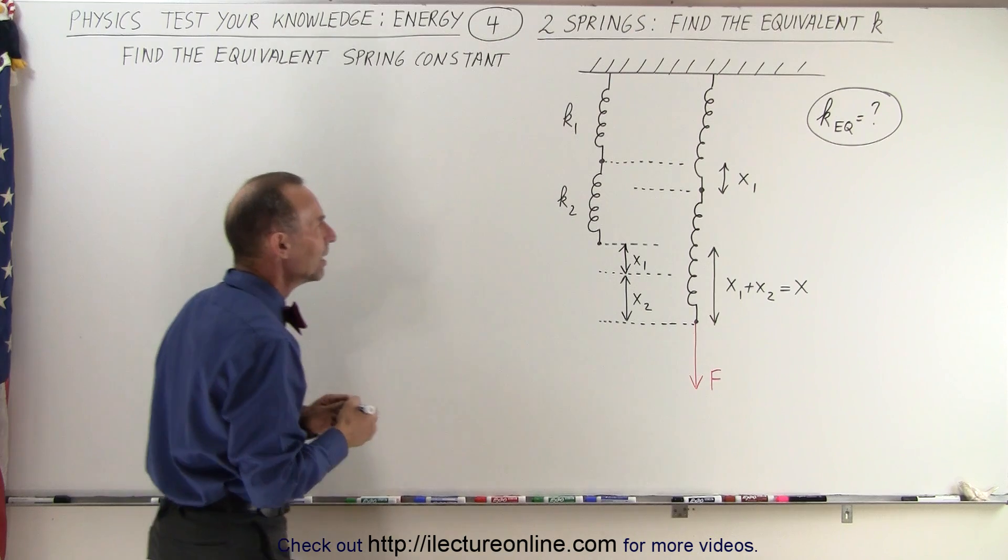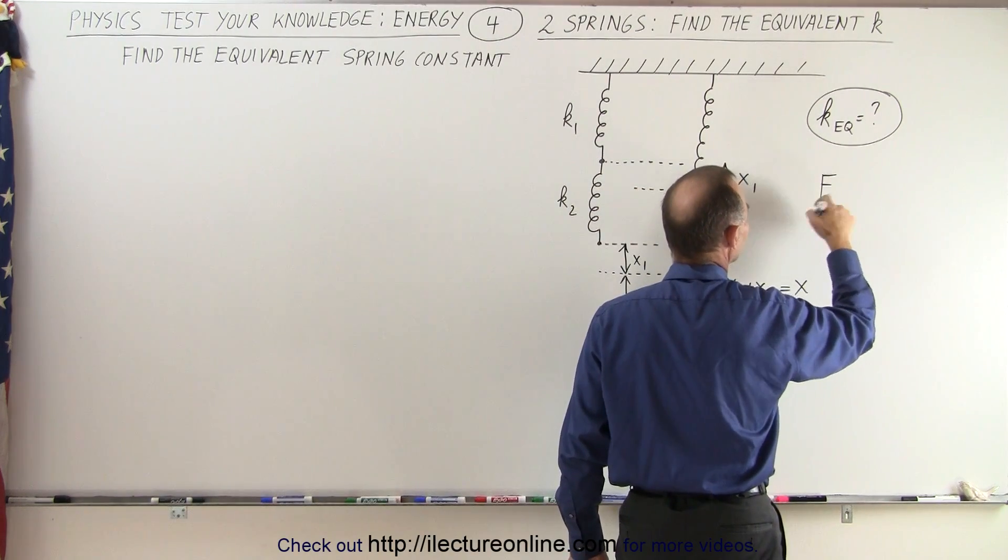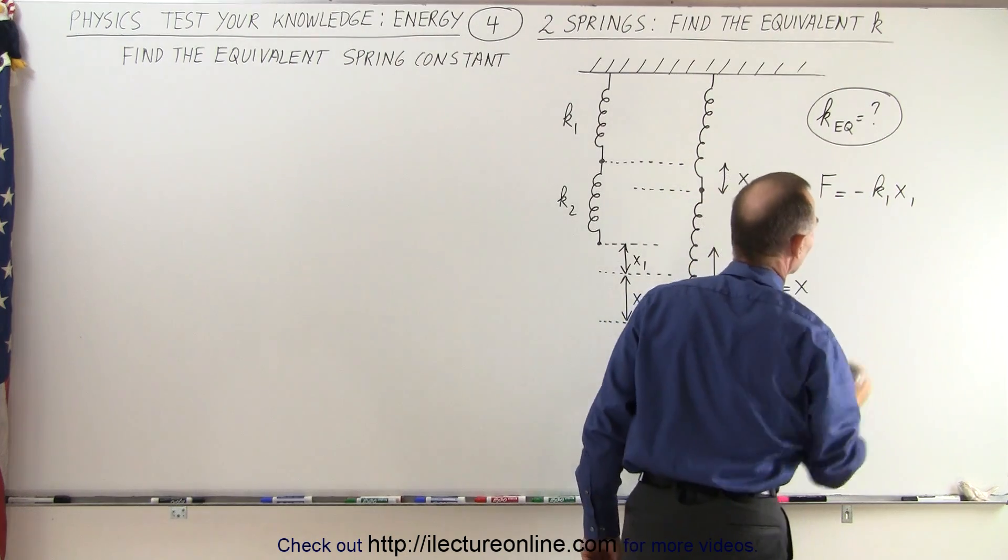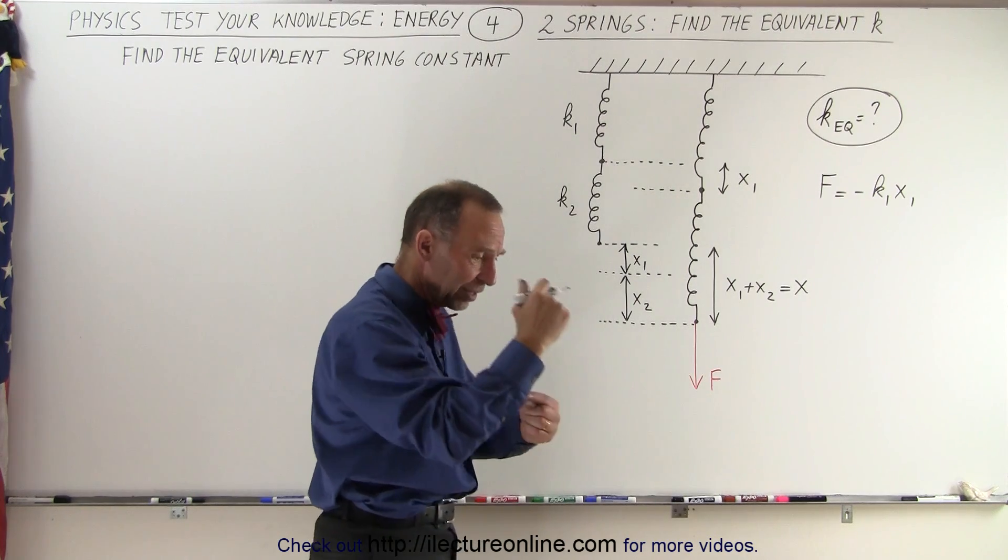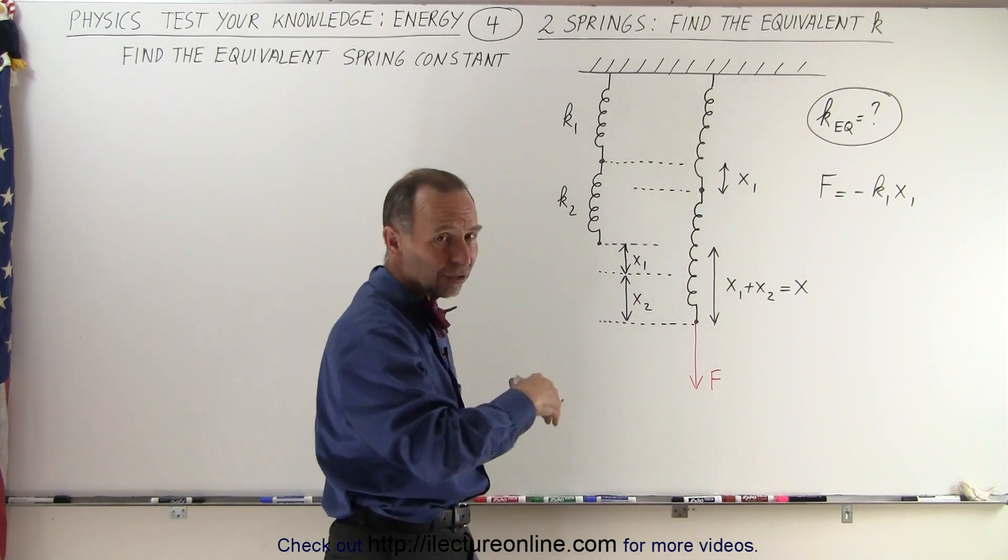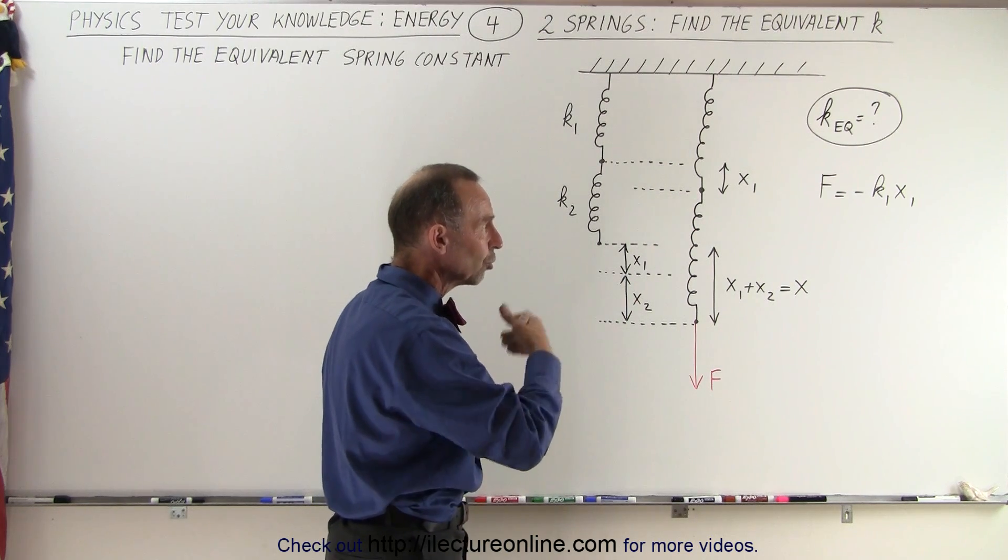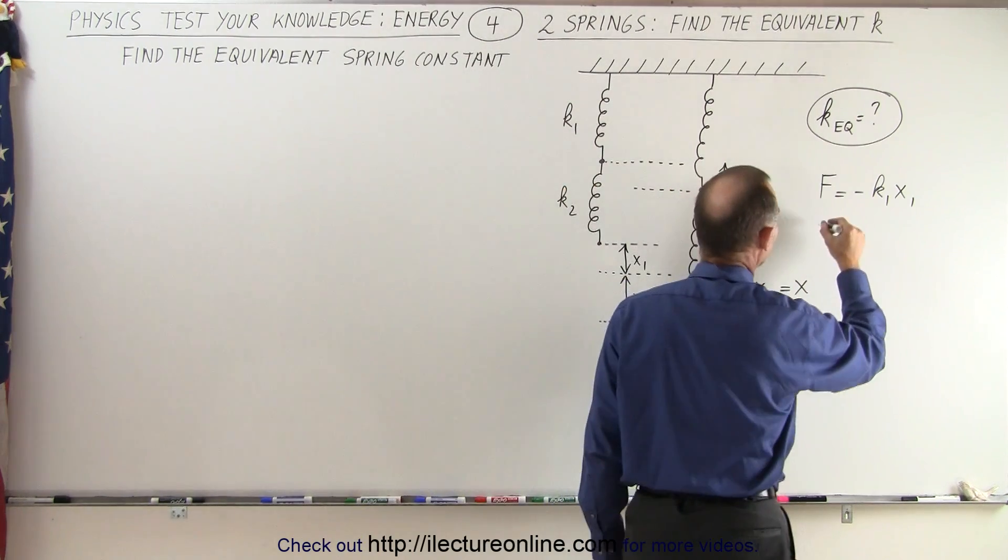Well first of all, what we can say is that F, the force applied, is going to be equal to minus k1 x1, because that's Hooke's law. The force applied equals the product of the spring constant times the elongation times the negative sign, because the force of the spring is opposite to the direction of motion away from the equilibrium point.